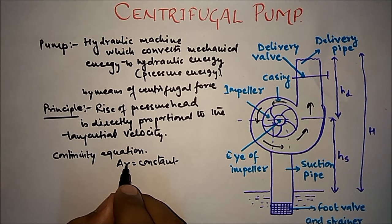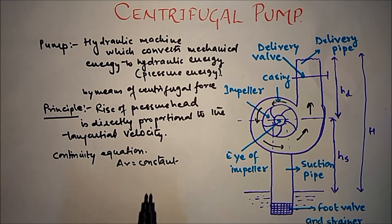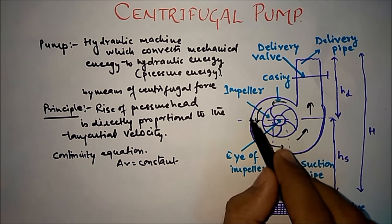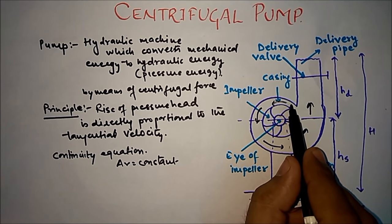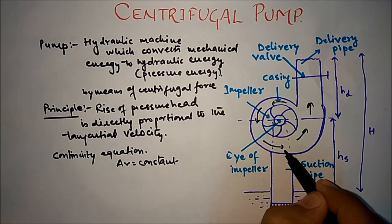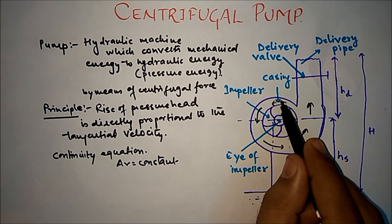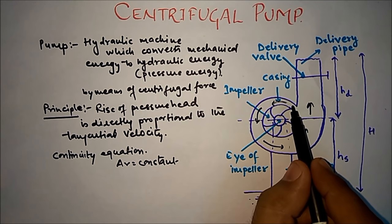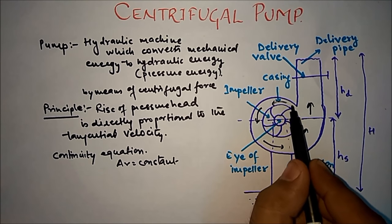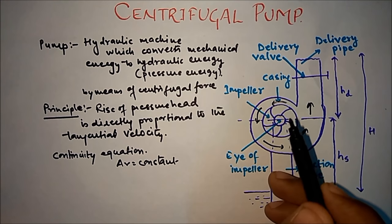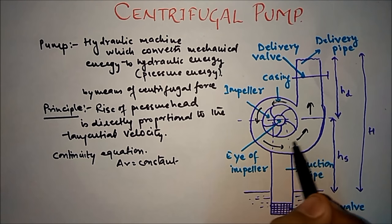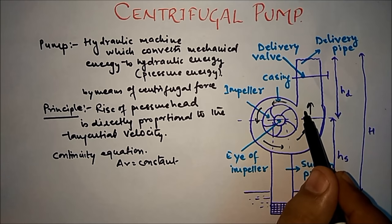To understand how this conversion happens, we use the continuity equation, which says A×V = constant — the product of area and velocity is equal to constant at any point in the flow. So when area increases, velocity decreases and vice versa. In this casing, the area is smaller at one end and gradually increases toward the outlet. As area increases, velocity decreases. Since kinetic energy equals ½mv², as velocity decreases, kinetic energy also decreases.